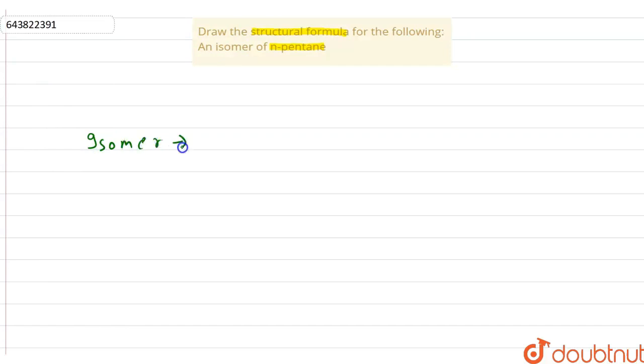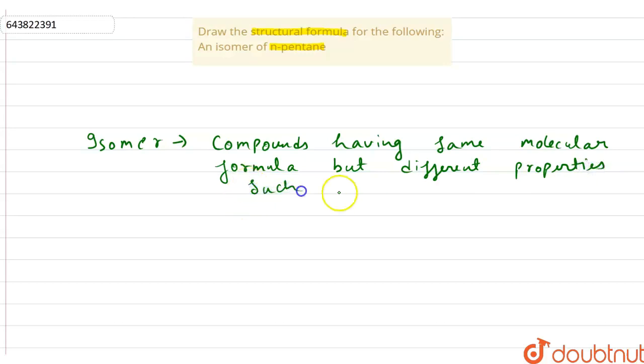So isomer can be defined as compounds having same molecular formula but different properties such as structures, melting and boiling point, etc. are called isomers.